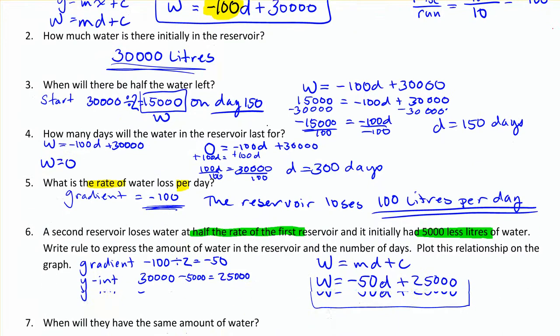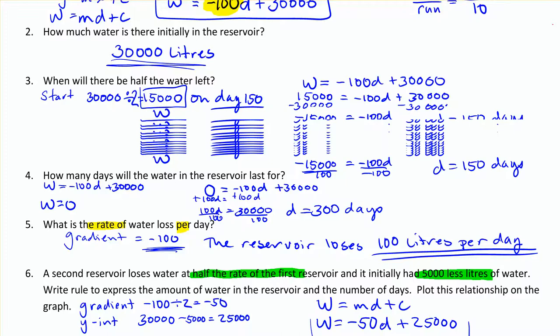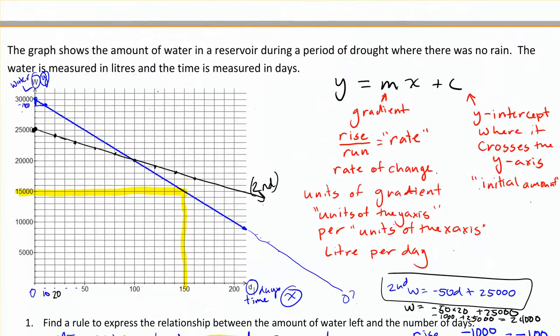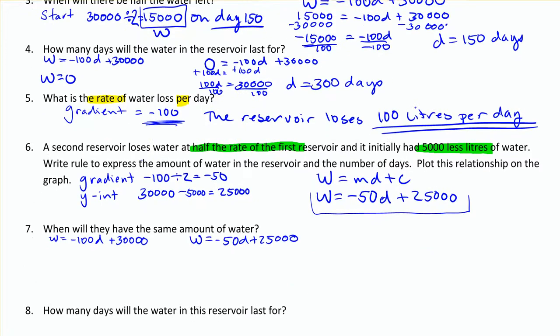So what else are they going to ask us now? When will these two reservoirs have the same amount of water? I have w is equal to negative 100 d plus 30,000. And I also have w is equal to negative 50 d plus 25,000. And if we look carefully at our graph, you see when those lines actually intersect, that's going to be when they have the same amount. So we could read this off the graph and see that it's actually on day 100, where they have the same amount. But it's important to know how to show our working for this as well, because they're often looking for that. Or you might have a case where you cannot read it off the graph.